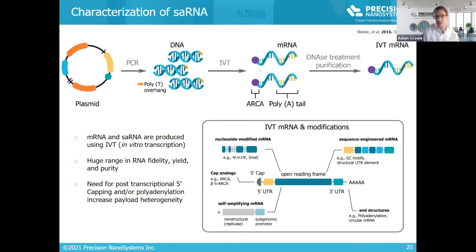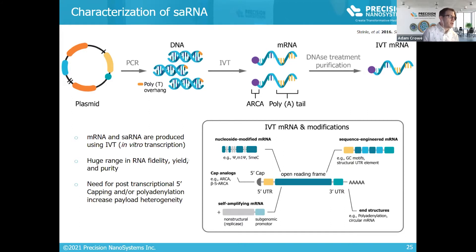After IVT, the transcript needs to be subsequently 5' capped using a different enzyme or process, and polyadenylation is also added. In the end, you get this highly ordered structure containing many different structural elements. It's also important to consider that each of these synthetic processes has different efficacies, so you can have very different yields day to day depending on how well they work.